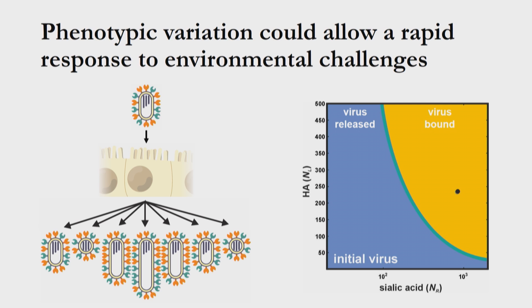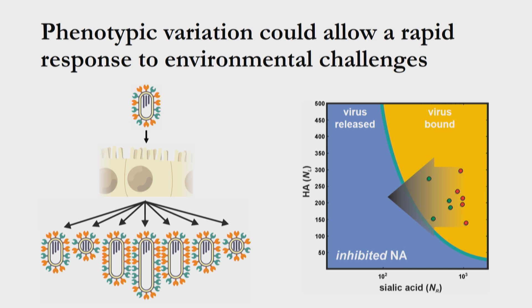The next step was to understand what the significance of this might be for adaptation or infectivity. If we start from an individual virus that initiates infection, it produces many progeny broadly distributed in the HA–sialic acid space. However, if they have a functional neuraminidase, this pushes them all into a regime where they are able to detach late in infection. If we inhibit neuraminidase through drugs like oseltamivir, this may no longer be the case — we may split the population into those that can and those that cannot detach from the cell.